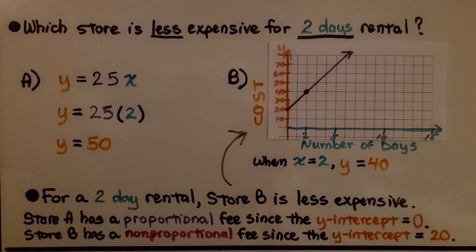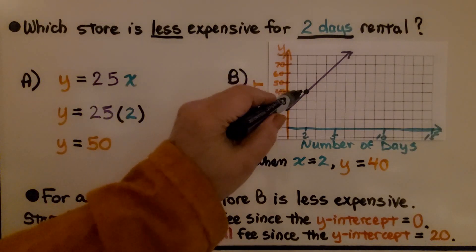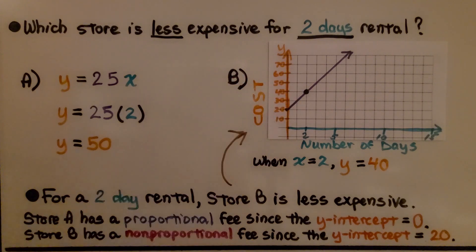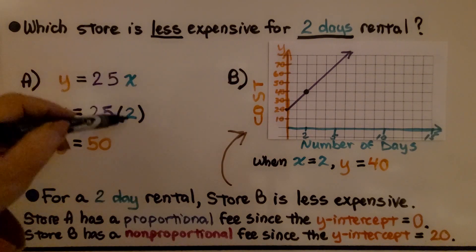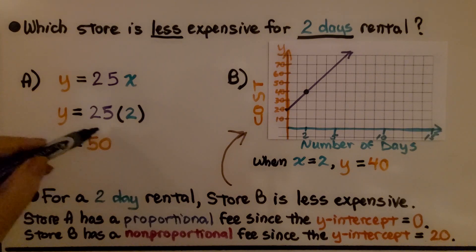So we previously found that store A was less expensive for one day. Which store is less expensive for two days' rental? What if Bob needs that carpet shampooer for two days? For store A, we have y = 25x. If we put 2 for x, then y is going to equal 50. It'll cost him $50 for two days.